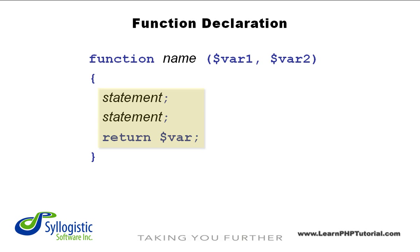Next is the function's body, which is where we add the group of statements for that function. Finally, within the body, functions can return values. This lets us supply a number of values to a function, operate on those values, then return a new calculated value.